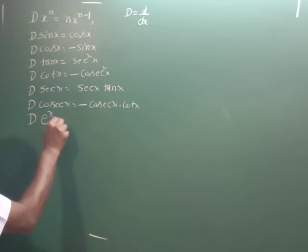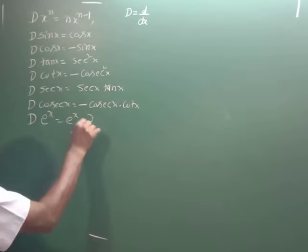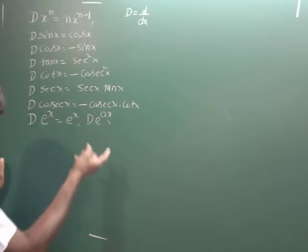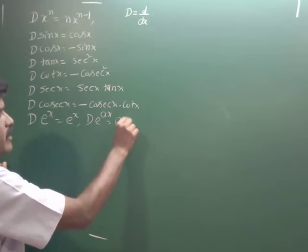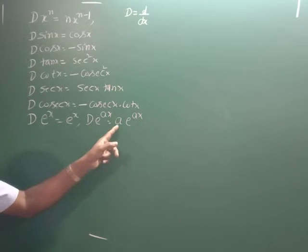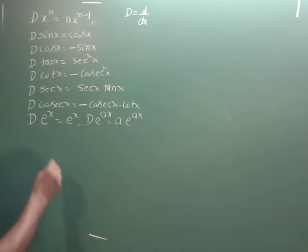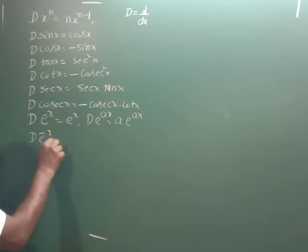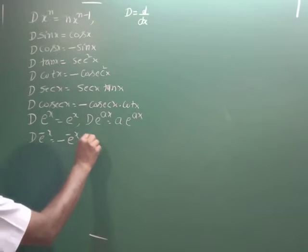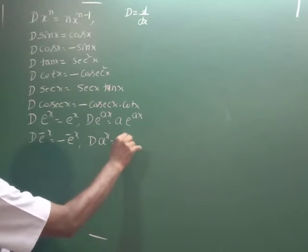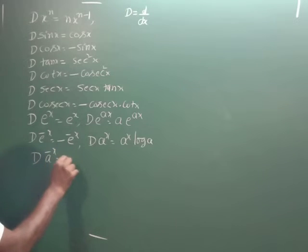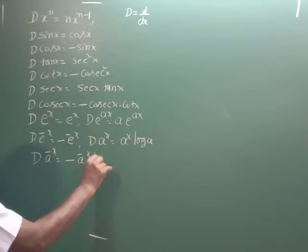Derivative of e to the power x is e to the power x. Whatever the coefficient of x is — whether minus a or plus a — the derivative is a into e to the power x. For example, derivative of e to the power of minus x is minus e to the power of minus x. Derivative of a to the power x is a to the power x into log a. Derivative of a to the power minus x is minus a to the power minus x into log a.